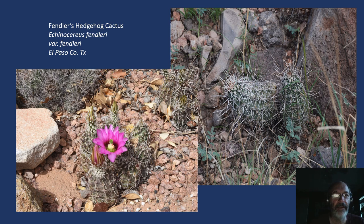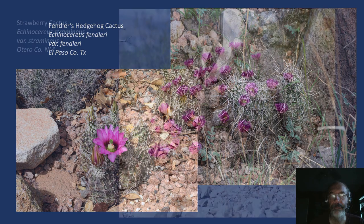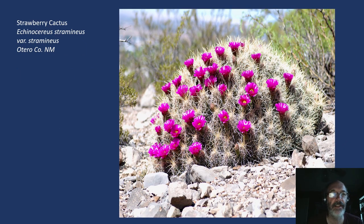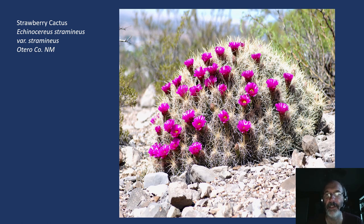And then another favorite, Fendler's hedgehog. These are not uncommon in the western part of West Texas up into New Mexico, with several varieties in Arizona as well. Variety fendleri — the one we have here — is another gorgeous plant. And then another strawberry cactus, Echinocereus stramineus — the name referring to it looking like a mound of straw. Wonderful, very tasty fruit. A large plant in full bloom is really impressive. They're a fairly common plant in much of the Chihuahuan Desert, and these mounds can get up to two feet high and three feet across.